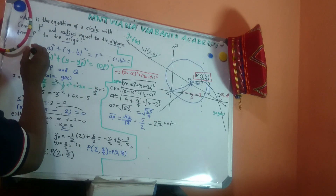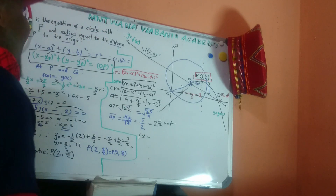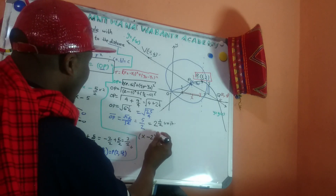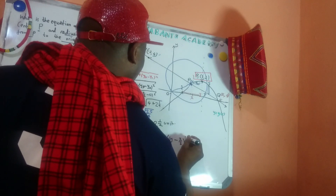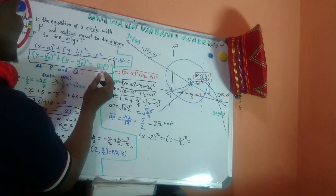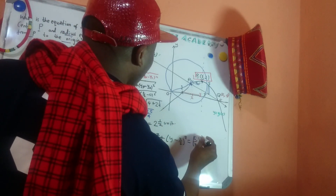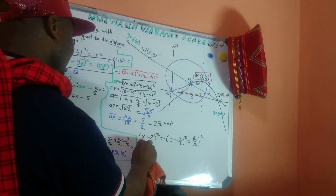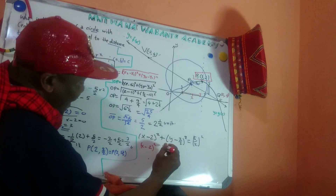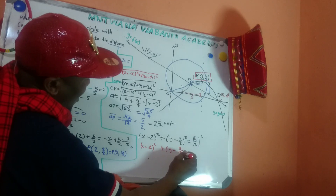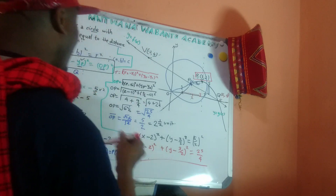Now we can write the equation of the circle. My center is (2, three over two) and my radius OP is five over two, so OP squared equals twenty-five over four. The equation of the circle is: (x minus 2) squared plus (y minus three over two) squared equals twenty-five over four. That is the equation of the circle.